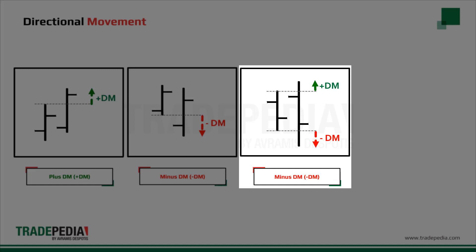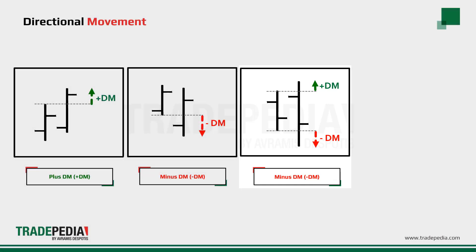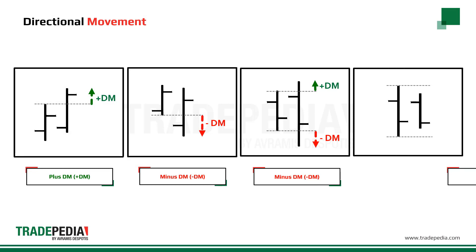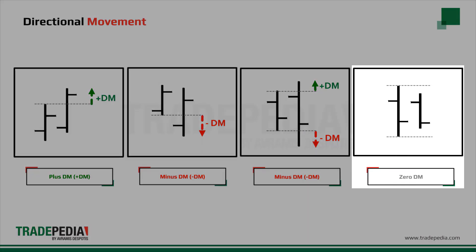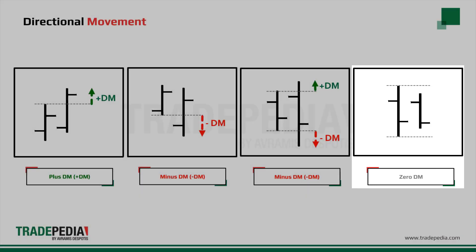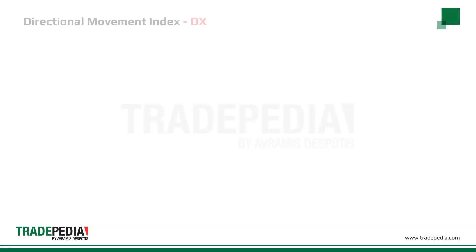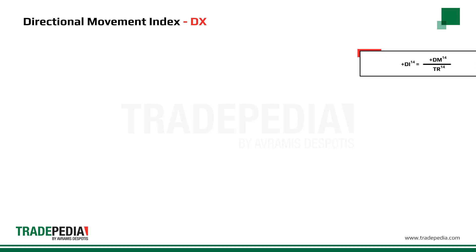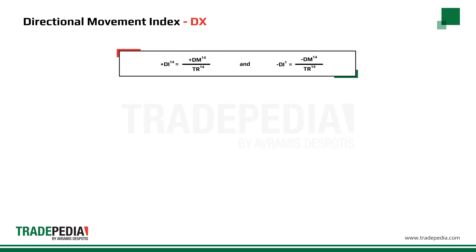In this example, the result is minus directional movement. And when the trading range is within the trading range of the previous day, there is no directional movement. The directional indicator, DI, is calculated by dividing the directional movement by the true range.